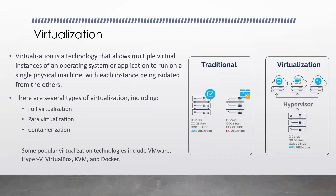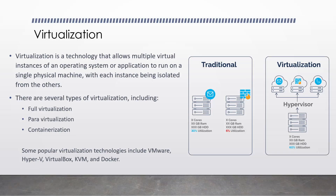There are several types of virtualization, including full virtualization — a type in which the guest operating system runs on top of a virtualization layer that emulates the underlying hardware. The next one is para-virtualization — a type in which the guest operating system is modified to run on top of a virtualization layer that provides direct access to the underlying hardware. And the third one is containerization — a form of virtualization that allows for the creation of multiple isolated instances of an operating system or application, known as containers, which share the same host operating system and kernel.